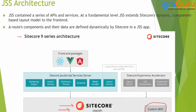On top of that, you have to install two packages: one is your Sitecore Experience Accelerator and the second is your Sitecore JSS package. When you install this package, it will install a few modules: layout services, SXA components, and PowerShell extension.